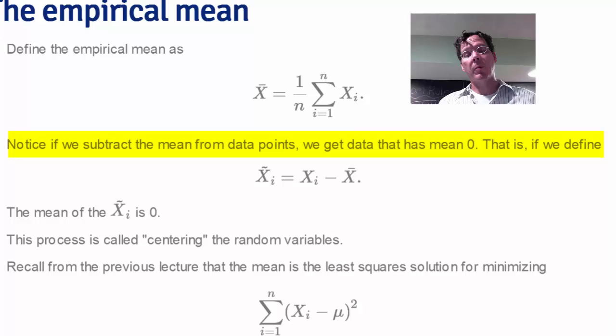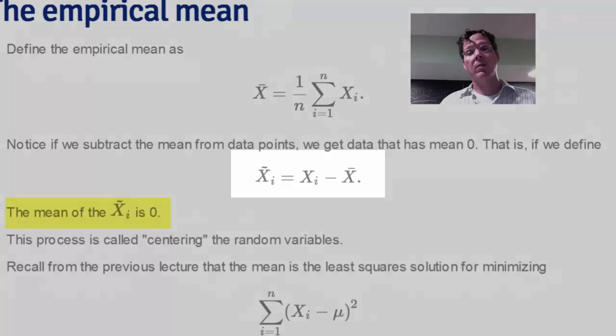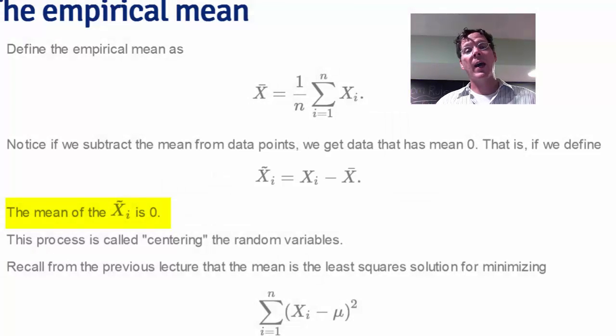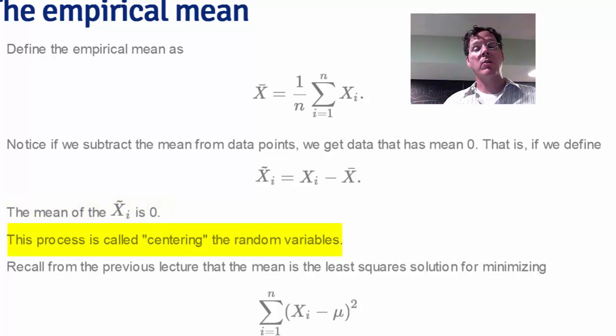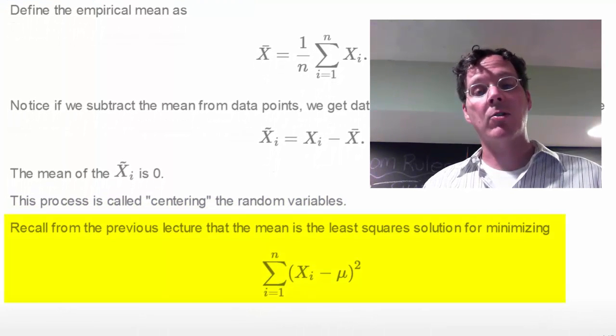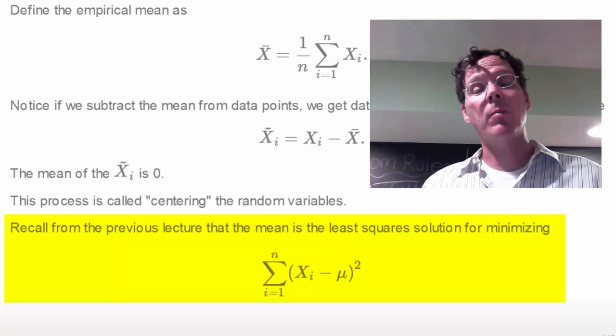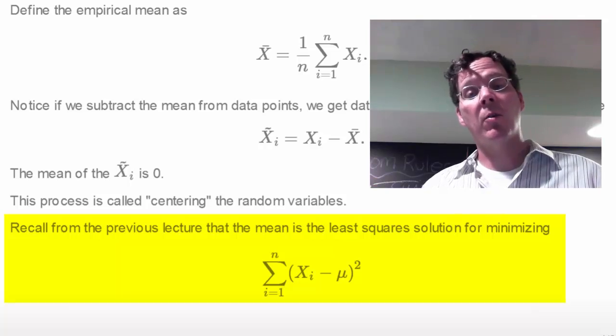Notice if we subtract the mean from every data point, then we wind up with a new data set with n observations. However, this new data set has mean zero. So notationally, if I define x̃ᵢ as each xᵢ point subtracting off the mean, then this new data set, the x̃ᵢ's, have mean zero. This process is called centering the random variables. And you can check it empirically by simply generating a bunch of vectors, subtracting the mean from each element of the vector, and taking the mean of the new vector, and you'll see that it's always zero. Also recall from the previous lecture that the sample mean is the least squares solution. So if we want to find the value of μ that minimizes the summation (Xᵢ - μ)², then that μ works out to be x̄.